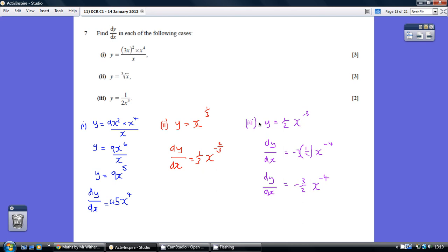Part 3. Be careful here. This y equals 1 over 2x cubed is the same as y equals a half x to the minus 3. It's fairly straightforward to differentiate: multiply by the minus 3, reduce the power by 1, so minus 3 becomes minus 4.